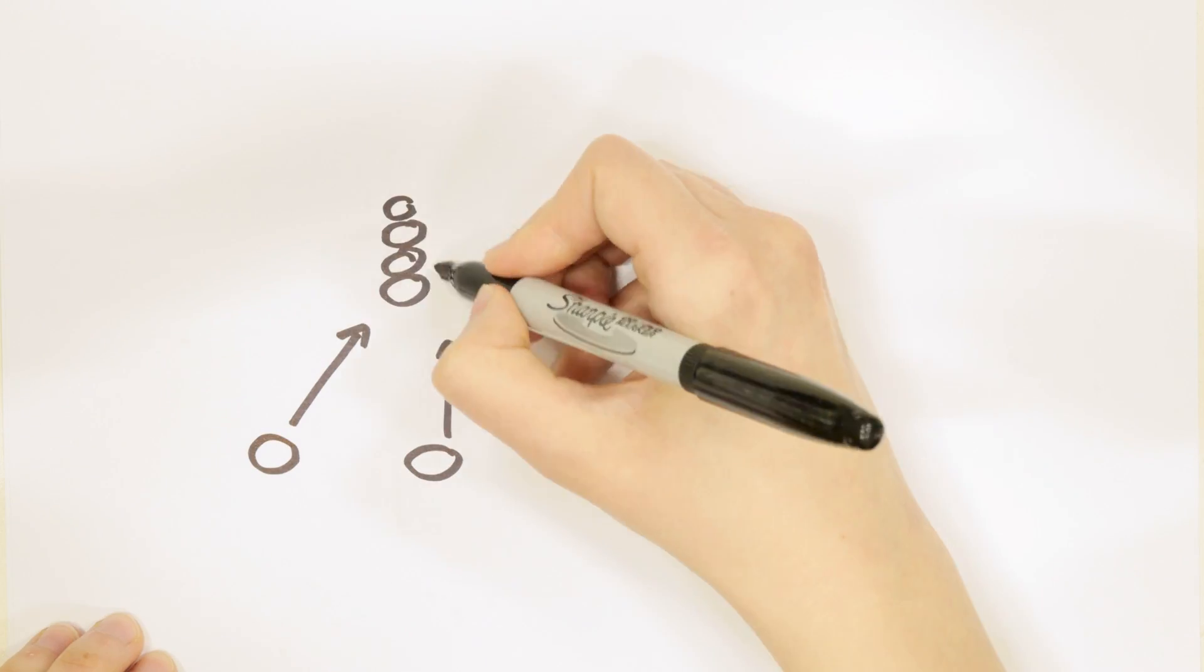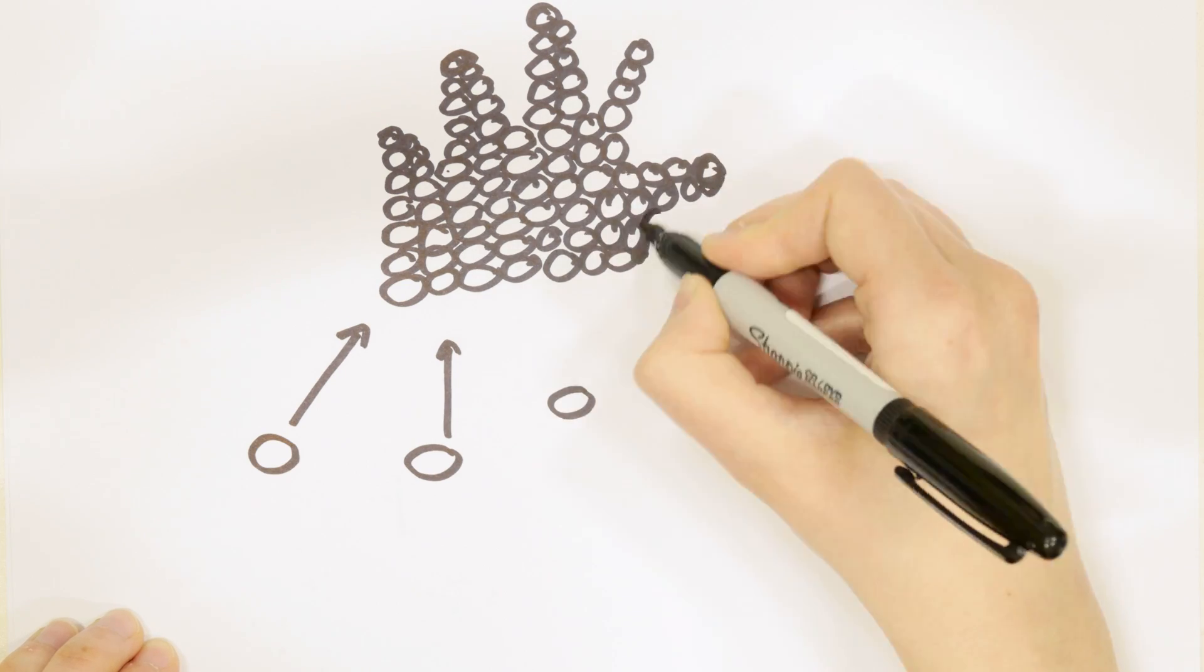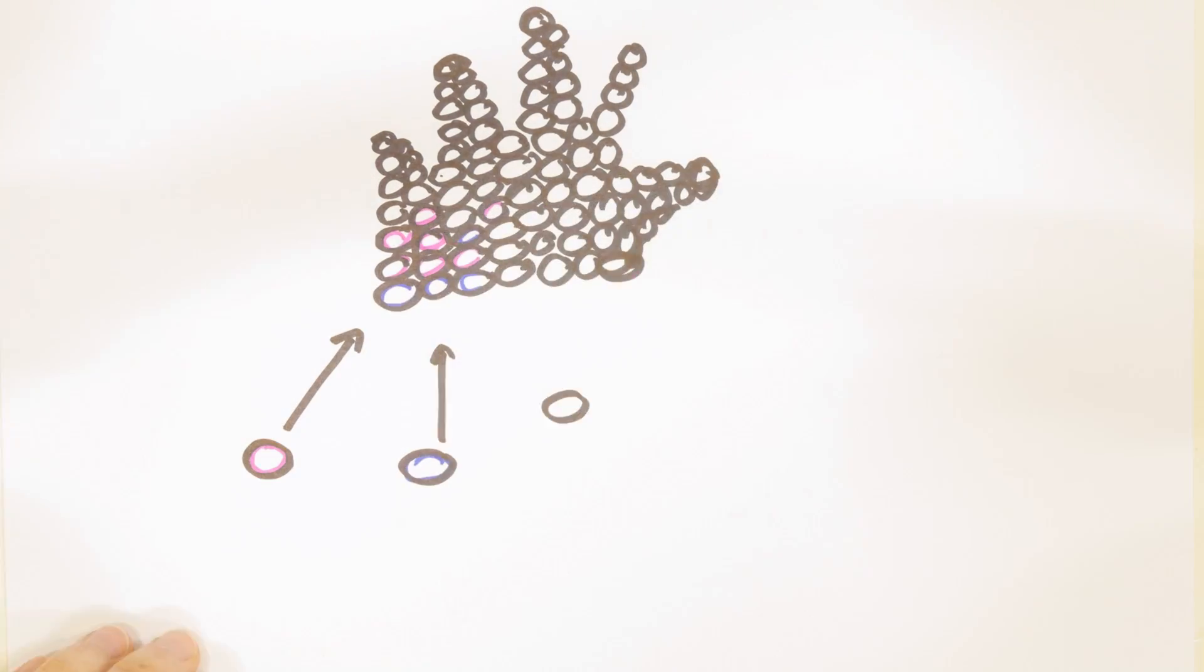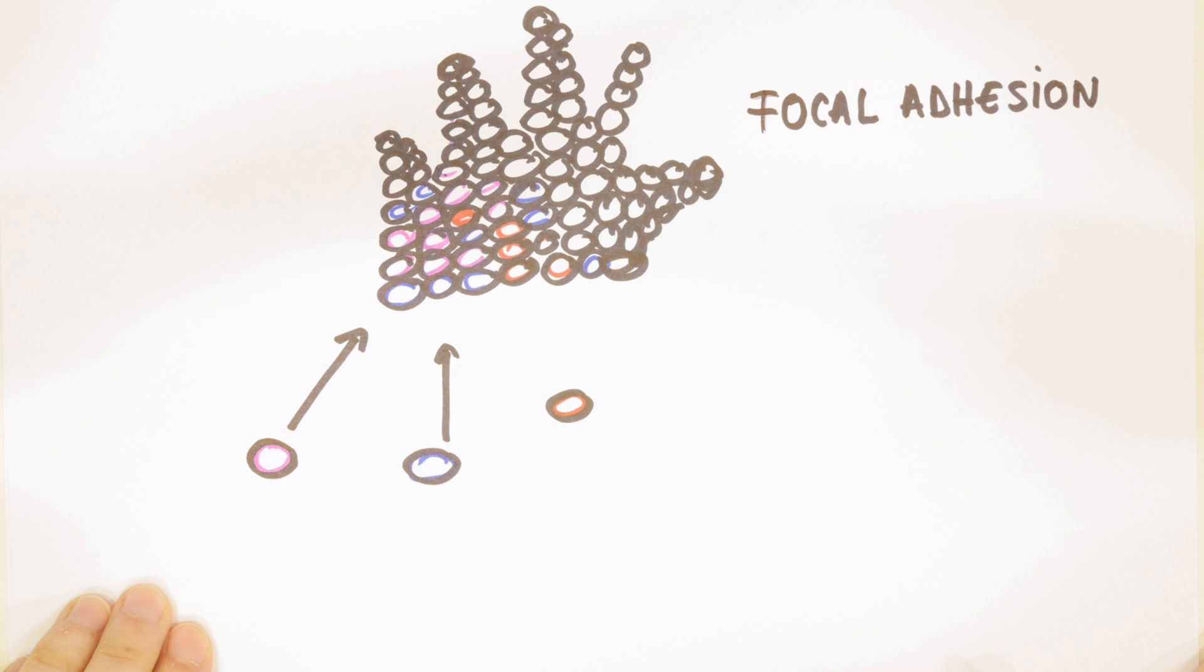Hundreds of proteins come together in a defined and intricate order to form structures known as focal adhesions. These form at the edge of the cell and reach outside, literally grabbing onto the surrounding environment, basically acting like a cell's tiny hands.